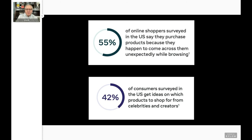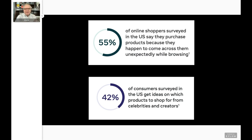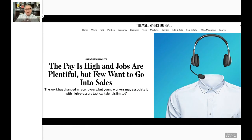Here's another one: 42% of consumers surveyed in the U.S. get ideas on which products to shop from celebrities and creators — let's use another word for that: influencers. An influencer isn't necessarily a teenager in baggy jeans selling energy drinks. It could be your neighbor. The research shows that trust in businesses, brands, and advertising has declined 13 years in a row. Who do people trust? Each other. They trust their neighbors, they trust influencers. Research shows the number one reason young people go on social media every day is to see what their favorite creator or influencer has posted. This is a whole new trend that's going to continue to grow dramatically.